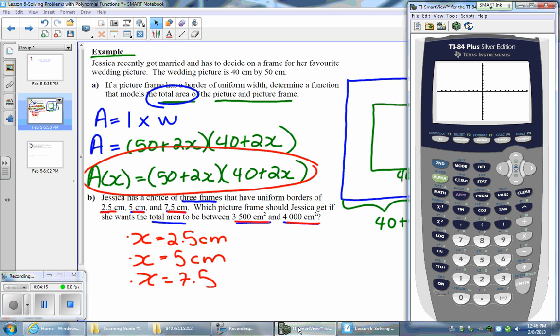We could plug it in and do it algebraically or we could use the calculator because it's actually quite fast. Go into your calculator, go to your y equals screen, and graph the function. So 50 plus 2x, then multiply that by 40 plus 2x. Let's try zoom 6 standard for now. It doesn't show anything, we're actually working with quite large values.